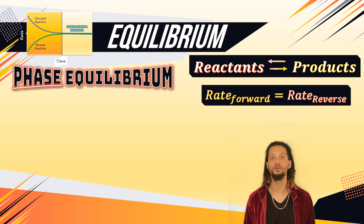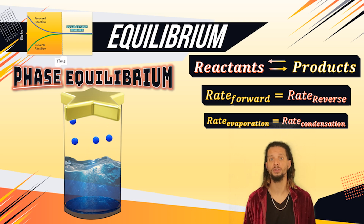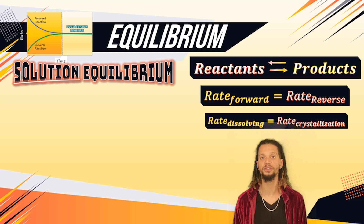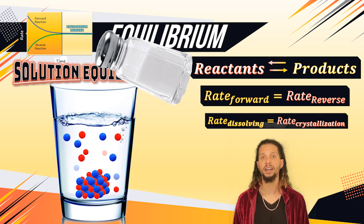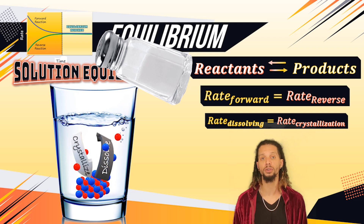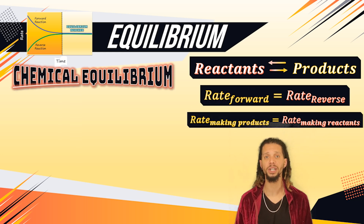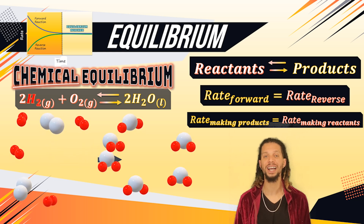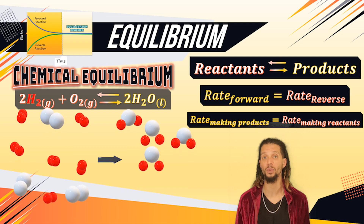Phase equilibrium occurs when the rate of one phase change is equal to the rate of the opposing phase change, like our example of the covered glass of water where the rate of evaporation is equal to the rate of condensation. Solution equilibrium occurs in saturated solutions when the rate at which the solute dissolves in the solvent is equal to the rate of crystallization of that same solute. So if I were to add salt to this glass of water and the salt water mixture reached solution equilibrium, the salt particles would be dissolving and crystallizing at the same speed. During chemical equilibrium, the rates of forward and reverse reactions are equal, and with products and reactants being made at the same speed, the concentrations of substances in that system will remain constant while at equilibrium.